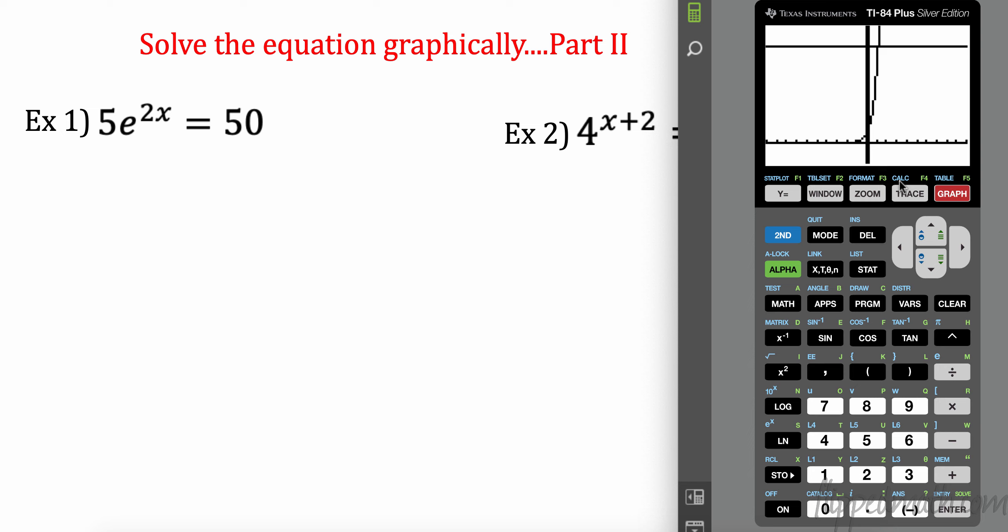So now I have to change my window. So let's think this is a y value of 50. So I probably need to see my y values. My min, negative 10. My y max right here needs to change. I'm going to come down and change that. Maybe I'll change it to 60. And then I'll graph again and see what happens. Great. Now I can see this is where they cross. That's going to be my solution. I need to calculate. So I have to do second trace. That allows me to calculate the intersection, number 5.